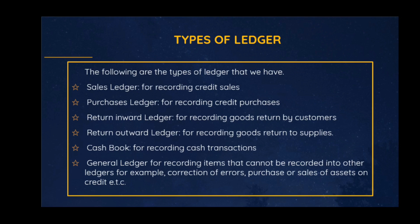There are six types of ledger. We have the sales ledger, which is used to record goods sold on credit. The purchases ledger is for recording goods purchased on credit. We have the returns inward ledger, used to record all goods returned by the customer to the business, and the returns outward ledger, used to record all goods returned to the supplier by the business. We also have the cash book, which records any cash transactions.